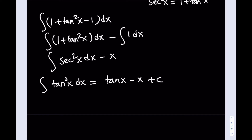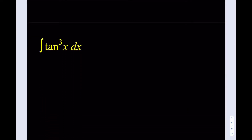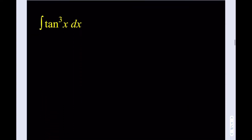So the integral of tangent squared x dx equals tangent x minus x plus c. This is very important — we're going to be using this in other problems as well. Now let's continue to the next one: the integral of tangent cubed x. We're increasing the powers of tangent. When you have a tangent cubed, you can do this in different ways, but here is the method I'm going to use.